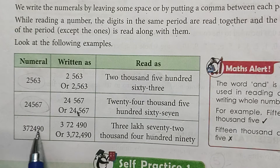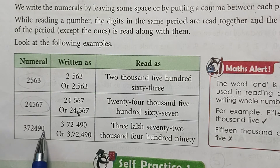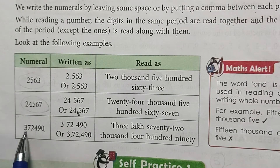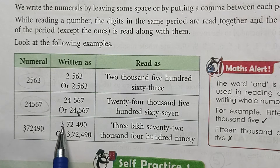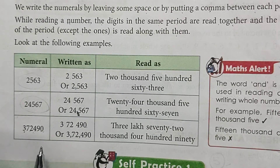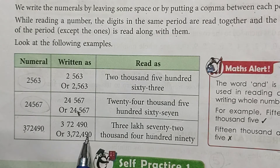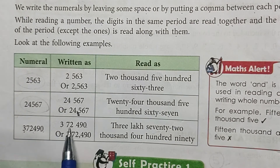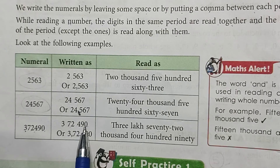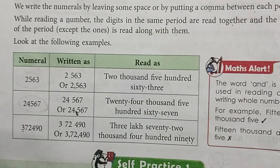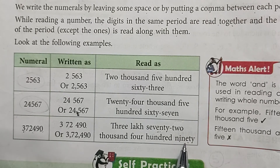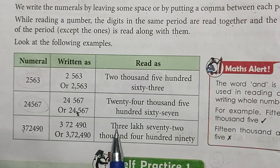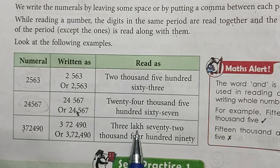Next is a 6-digit number: first 3 digits ones period की, next 2 digits thousands period की, last digit lakhs period की। 3,72,490 — लिखेंगे 3 space 72 space 490 या comma लगाकर 3,72,490। पढ़ते समय: 3,72,000 एक साथ पढ़ेंगे, फिर 490। और जब numbers को read करते हैं तो दो periods के बीच 'and' का use नहीं करते — सही तरीका है period का name साथ में पढ़ें, बीच में 'and' use न करें।